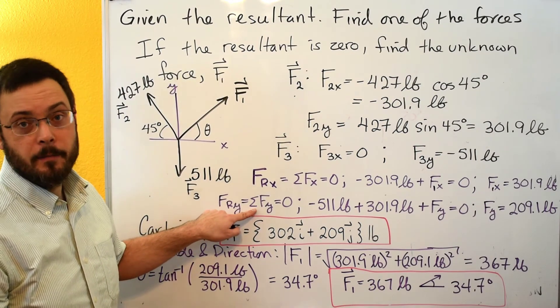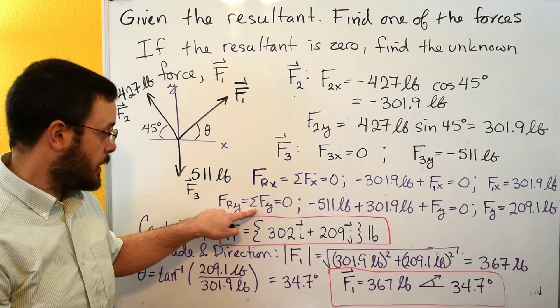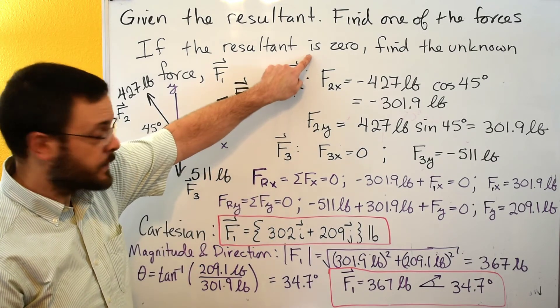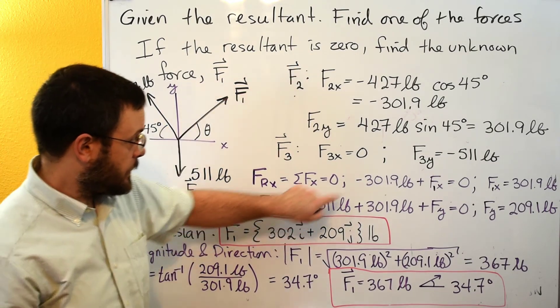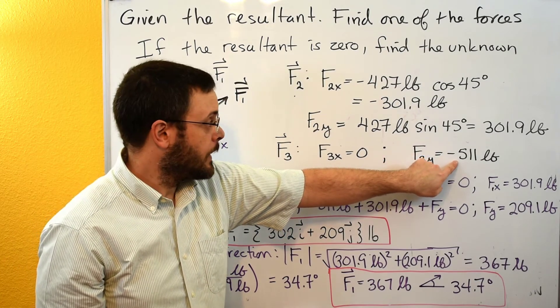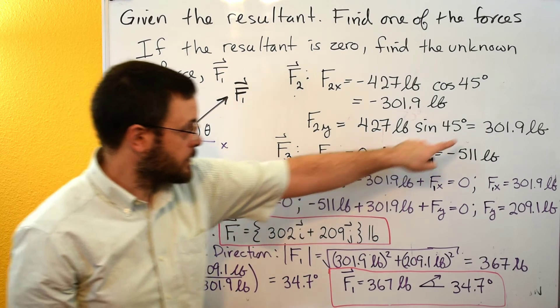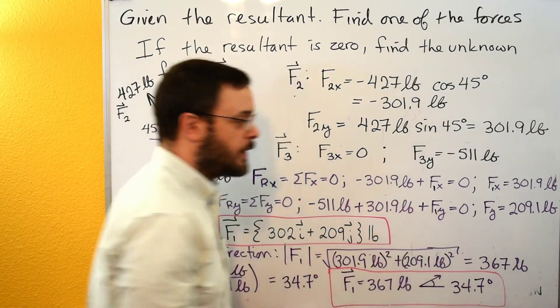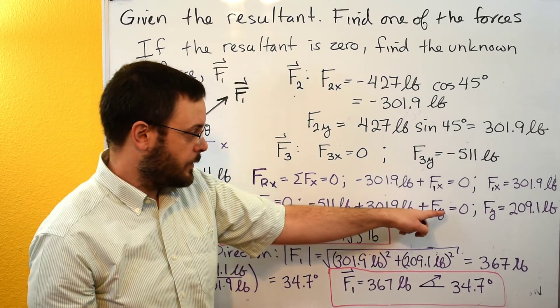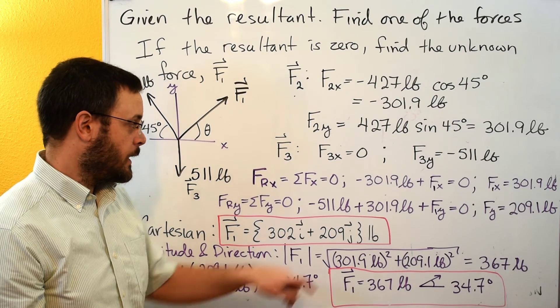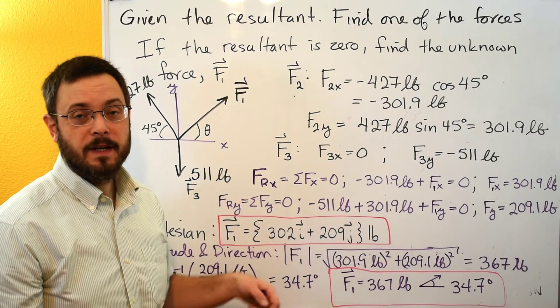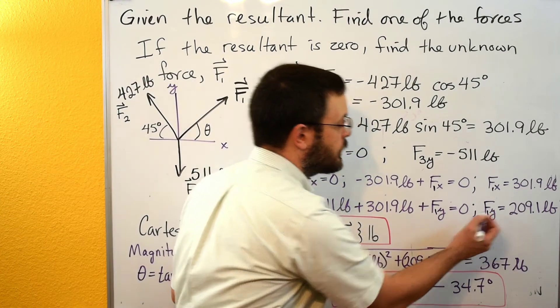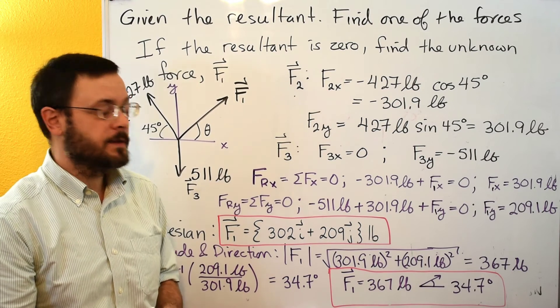Looking at our y resultant, it's equal to the sum of all the forces going in the y direction. We know that's got to be equal to zero because our resultant's equal to zero. So that's going to be the negative 511 pounds from here, the positive 302 pounds from here, and then plus our F1y value, and that's all got to equal zero. So now we can solve this for F1y. We add these two numbers together and we get a negative 209, add positive 209 to both sides, and that gives us that F1y is equal to positive 209 pounds.